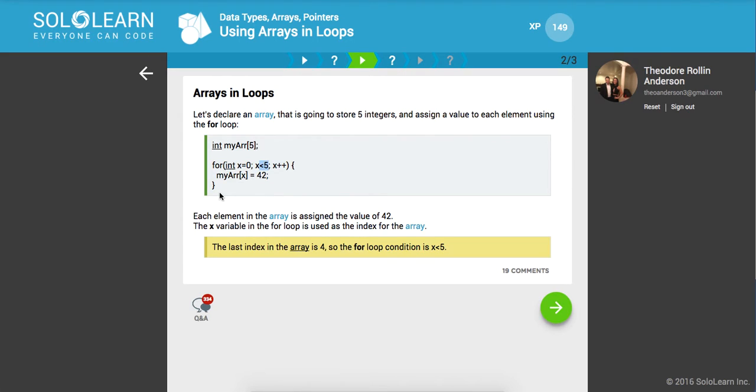And then it's going to break out. So, if we return our array at the very end, we're going to have all of our five elements in here filled with the value of 42. So, each element in the array is assigned the value of 42. The x variable in the for loop is used as the index specific position for the array. And the last index in the array is 4, so the for loop condition is x less than 5.